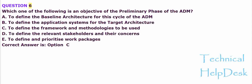Question 6. Which one of the following is an objective of the preliminary phase of the ADM? A. To define the baseline architecture for this cycle of the ADM. B. To define the application systems for the target architecture. C. To define the framework and methodologies to be used. D. To define the relevant stakeholders and their concerns. E. To define and prioritize work packages. Correct answer is Option C.